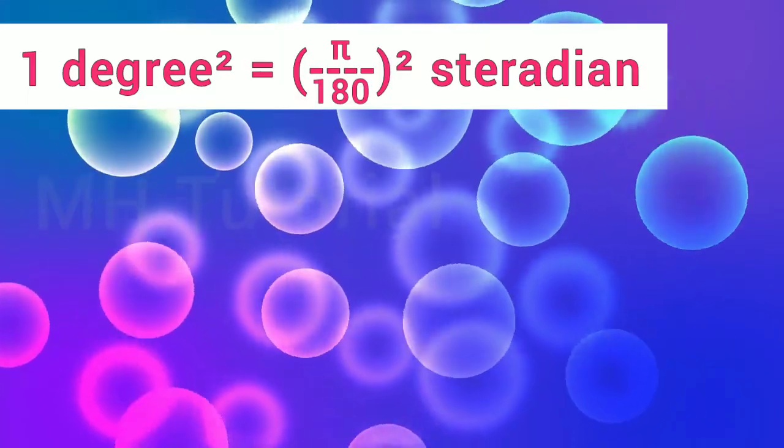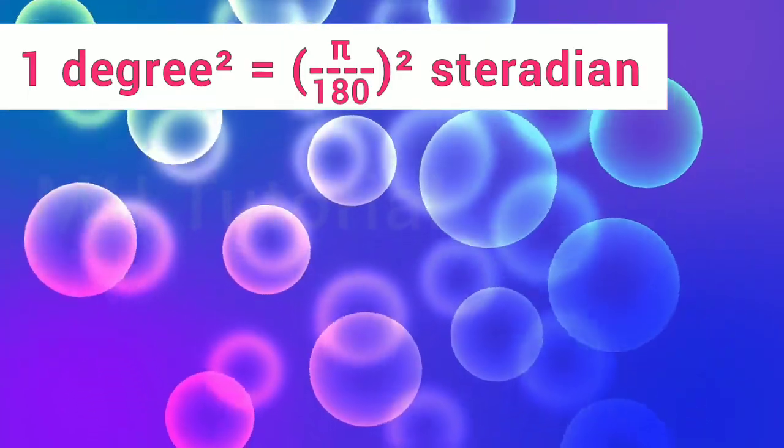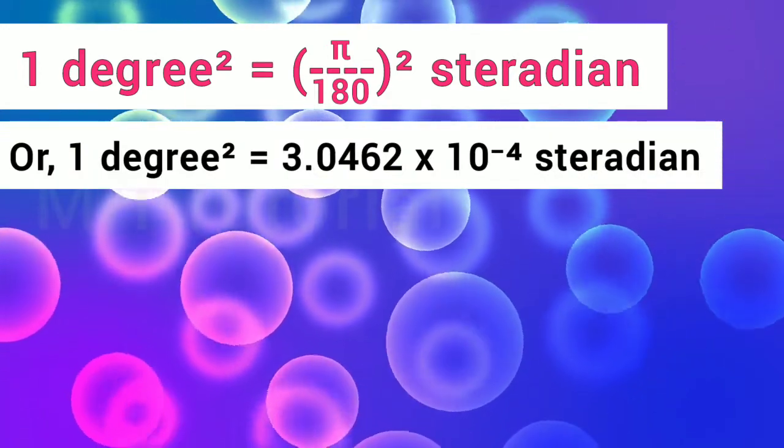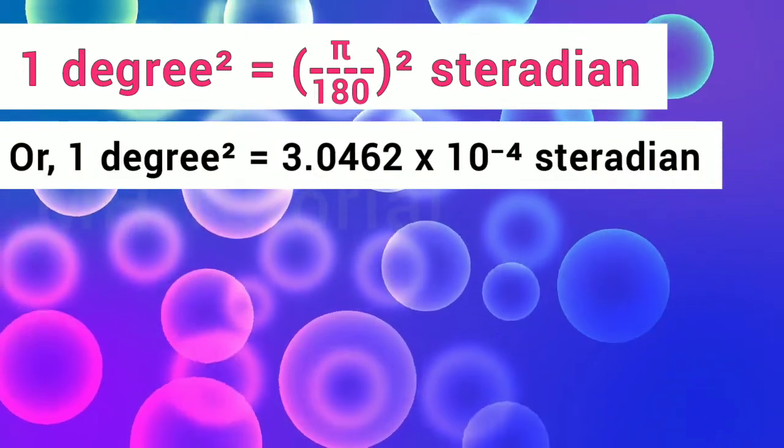1 degree square is equal to (π/180)² steradians, or 3.0462 × 10⁻⁴ steradians.